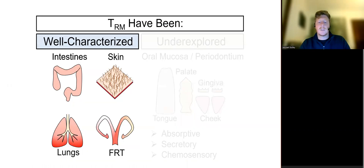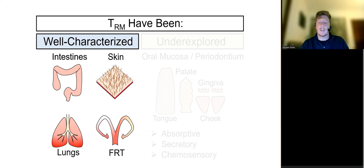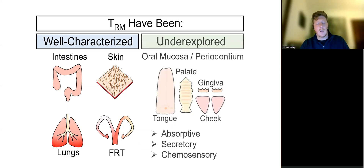The tissue-specific functions of TRM have begun to be well characterized in many locations, including the intestines, skin, lungs, and urogenital mucosa. However, despite serving as an access point for pathogens infecting the intestines and lungs, the ontogeny and functional implications of TRM within the oral mucosa remain comparatively underexplored.